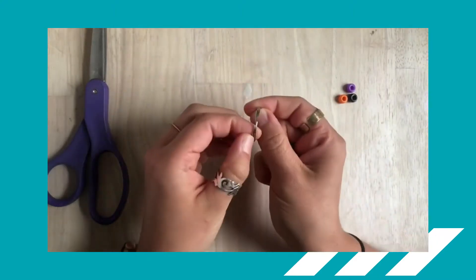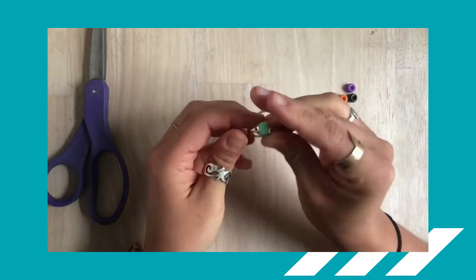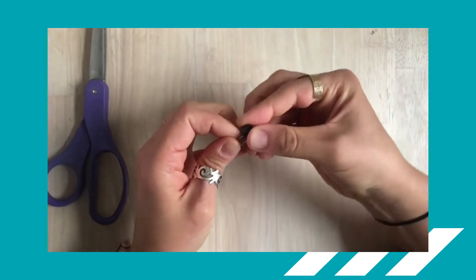You'll start by opening up one of your keyrings and threading two pony beads onto it. You do this the same way that you would thread on a key.